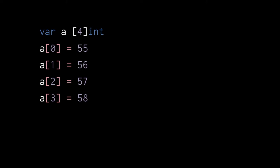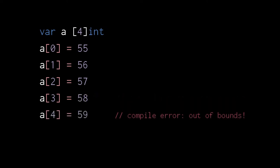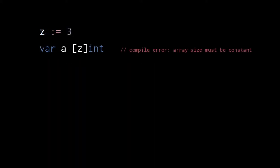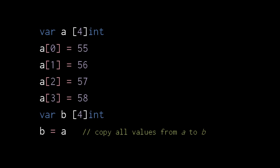Here we declare variable a to be an array of four ints. Unlike in JavaScript, arrays in Go have a fixed size that must be specified upon creation, and a single array can only hold values of one type. So when we assign a string to index three of this array of ints, the compiler will complain that we are assigning the wrong type. Likewise, we'll get an error if we attempt to assign to an out-of-bounds index. If the out-of-bounds index is specified by a constant, the compiler will catch the error; if specified with a variable, the error will not be caught until runtime. Also understand that the size of each array must be known at compile time, and so we can specify array sizes only with constants, not with variables or other expressions evaluated only at runtime.